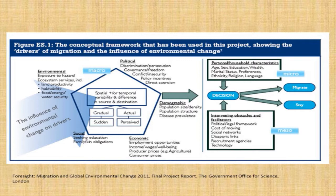An increase in rainfall doesn't cause you to migrate, but its influence on your crops does. A number of people have criticised this conception, but it was really good in basically moving away from asking why people are moving, to asking: if they move, does it put them in a better situation to deal with subsequent stresses from climate change?